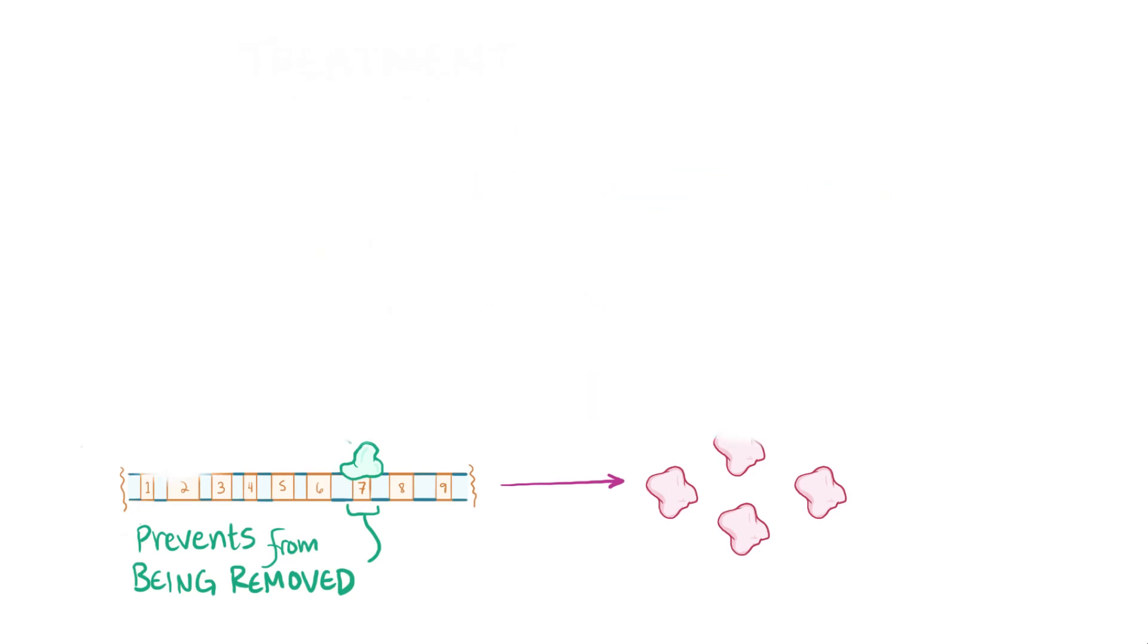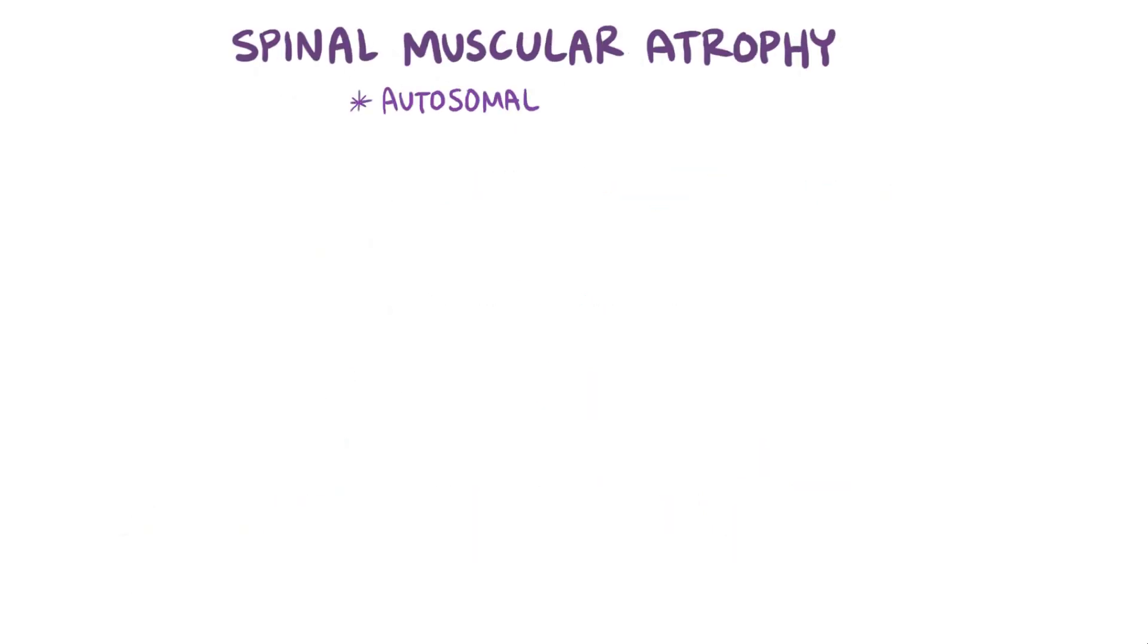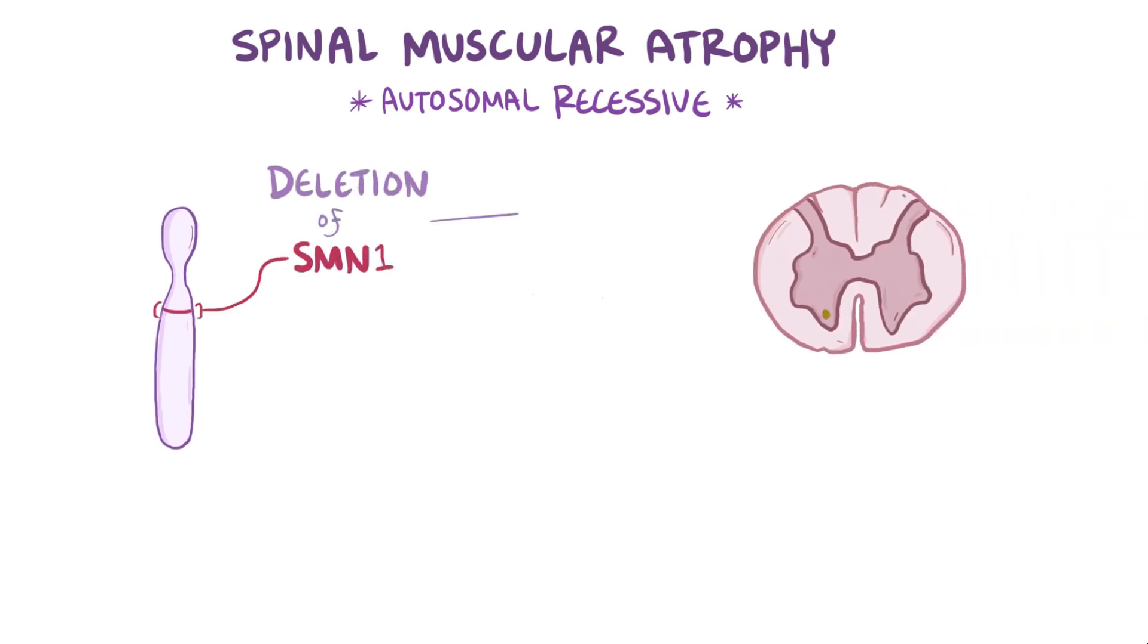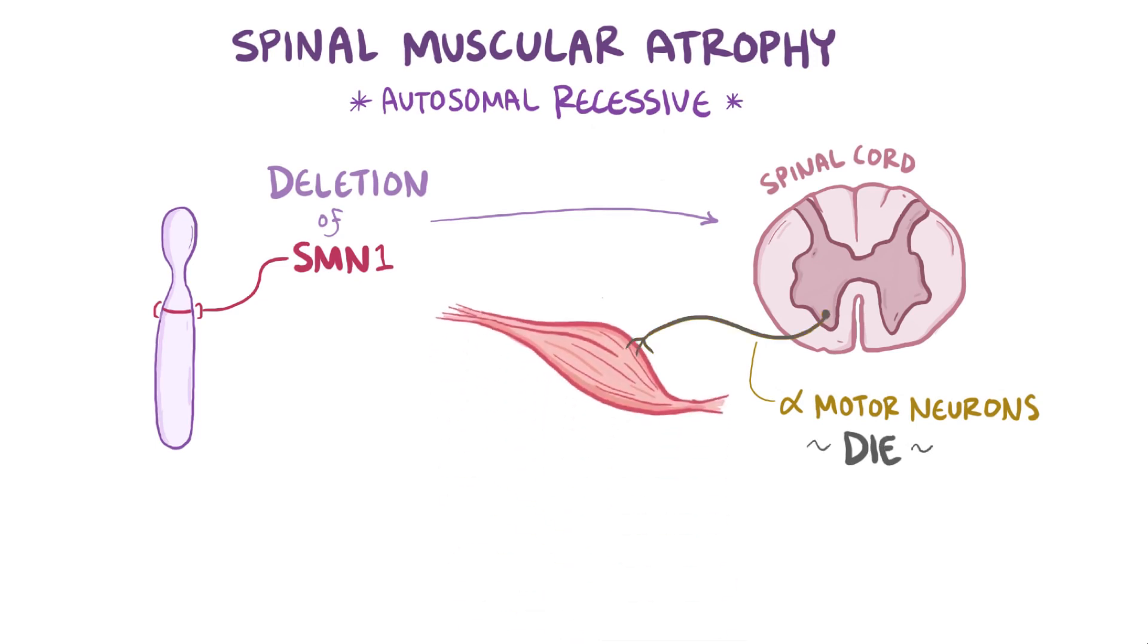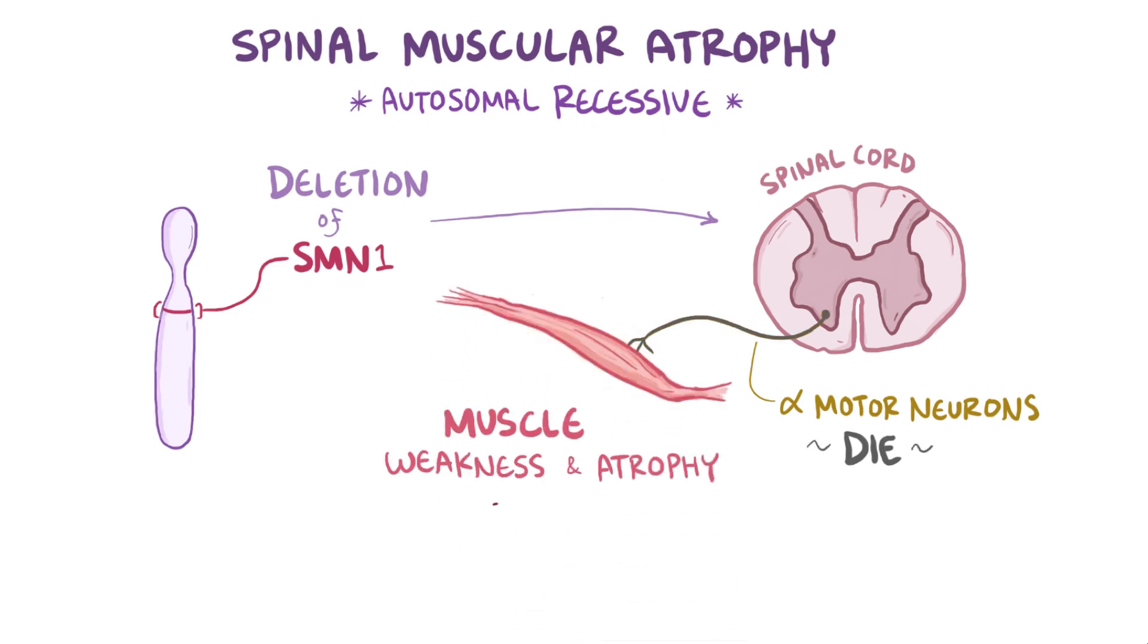Alright, as a quick recap, spinal muscular atrophy is an autosomal recessive disorder where a deletion of the SMN1 gene causes alpha motor neurons in the spinal cord to die, resulting in muscle weakness and atrophy, and in more severe cases, respiratory failure and death.